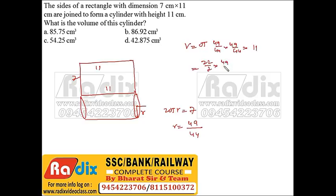So we have 22/7 times 49/44 times 49/44 times 11. Now 22, 2 times 11, 4 times 7, 7 times. Now whatever the answer, because it contains 8 in denominator, it will always contain 3 decimals, which is only option D. No need to go further, this is your answer.